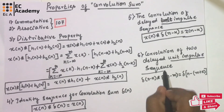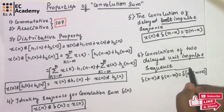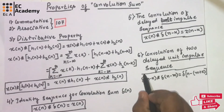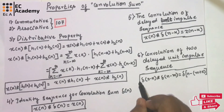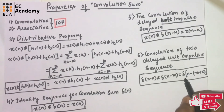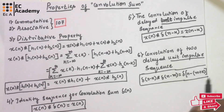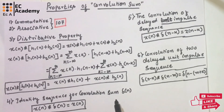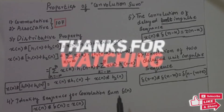This is one important property: when you convolve two delayed unit impulse sequences, you get delta(n minus m plus k). This concludes the properties of convolution sum. Hope you have understood the topic, thank you.